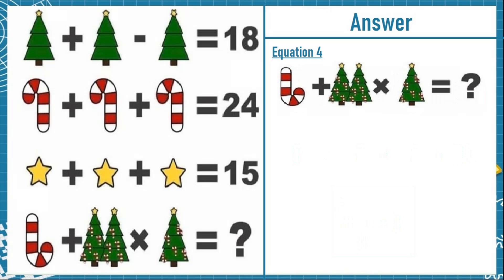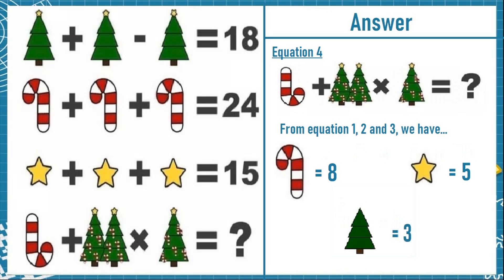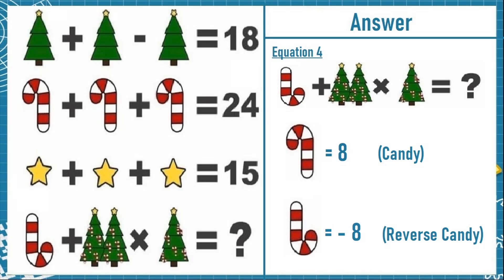Now moving on to the last equation, equation number 4. We have a candy plus 2 trees which have stars and candies, multiplied by a tree with star and candies. From equations 1, 2, and 3 we have candy equals 8, star equals 5, and tree equals 3. Looking at the candy in equation 4, it is the reverse of the candy in equation 2, so a reverse candy is equal to minus 8.